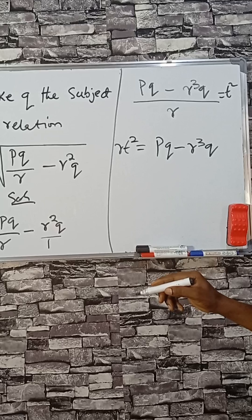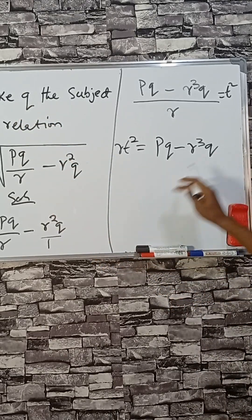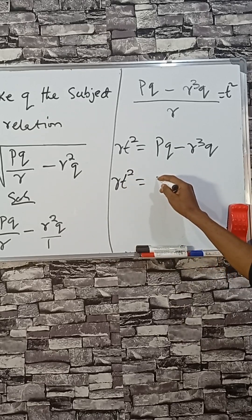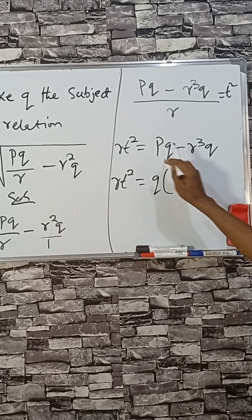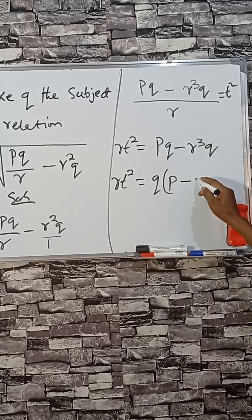cube. We are looking for q. We have q here and here, so we can factorize to have q stand outside. What is left here is p minus what is left here is r